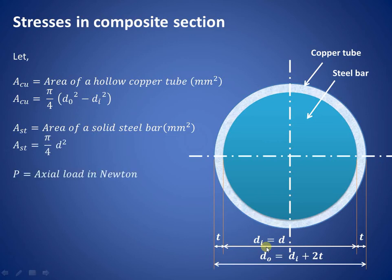Suppose the axial load acting on this composite section is P. A composite section is one that consists of two or more materials — here we have taken a copper tube and a steel bar as the two different materials, with the steel bar fitted inside the copper tube.